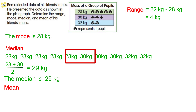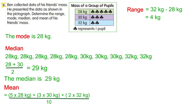Now find the mean. To find the mean, find the total mass of all the pupils divided by the total number of pupils. The total mass will be 294 divided by 10 pupils. The mean will be 29.4 kilograms.